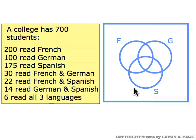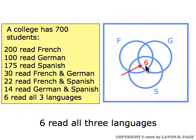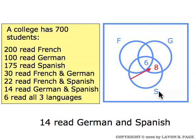So we're going to start by looking at this last piece of information — six read all three languages — and use that to put a six in the region that represents the overlap of the three groups: the ones who study French, who study German, and who study Spanish.